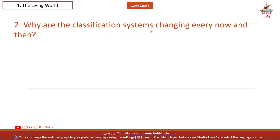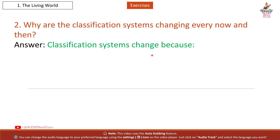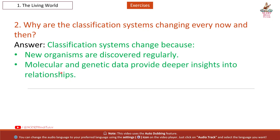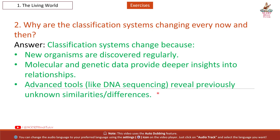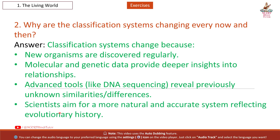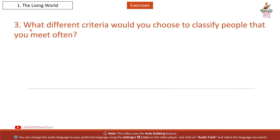Question 2: Why are the classification systems changing every now and then? Answer: Classification systems change because new organisms are discovered regularly, molecular and genetic data provide deeper insights into relationships, advanced tools like DNA sequencing reveal previously unknown similarities and differences, and scientists aim for a more natural and accurate system reflecting evolutionary history.